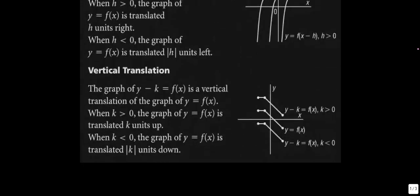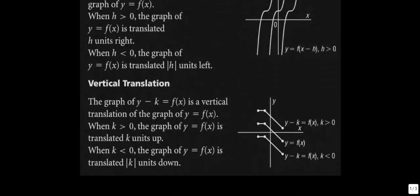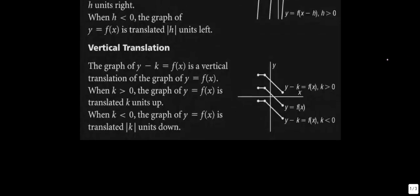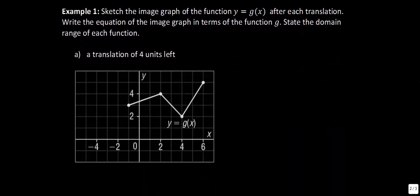The vertical translations work similarly. Rather than having the q on the right-hand side of the equation, if we were to move the q to the other side, it would be the same as y minus q. So we can think of the q value as also kind of being opposite. If you were to see y minus 3, that actually means the graph is going to go up 3. If you saw y plus 4, that means the graph is going to go down 4.